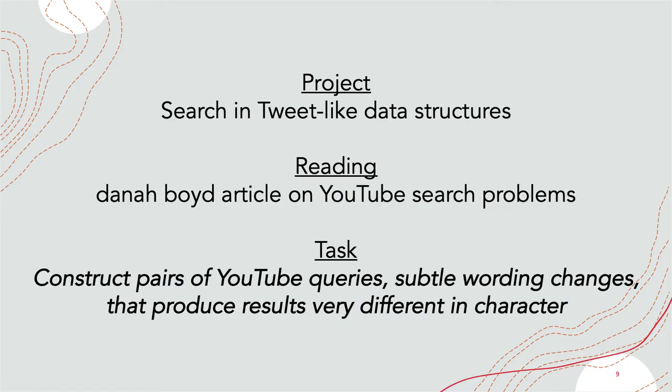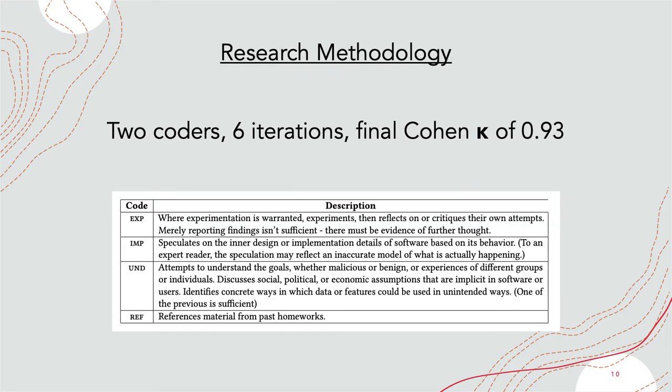Third example: students were asked to implement search functionality over different tweet-like data structures. They were then asked to read danah boyd's article about YouTube search and its impact on society, and then to create pairs of very similar YouTube queries that one would expect to produce largely similar results, but actually produced very different ones.